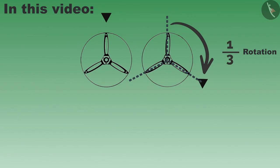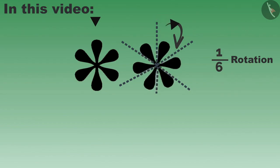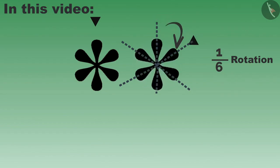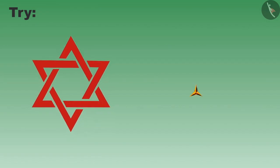And the shapes which look the same even after one-sixth rotation represent one by six rotational symmetry. You also try to find similar objects around you and try to find their rotational symmetry. Thank you.